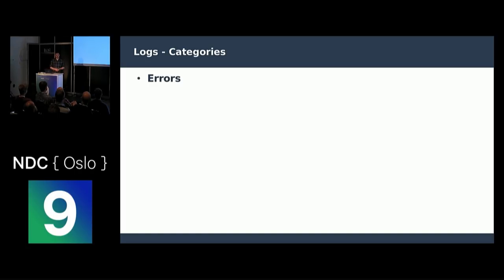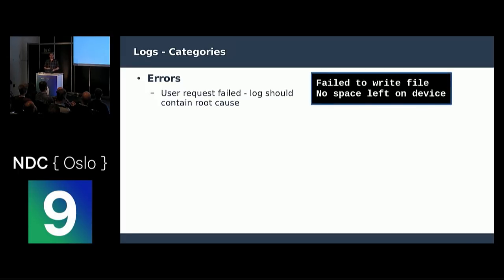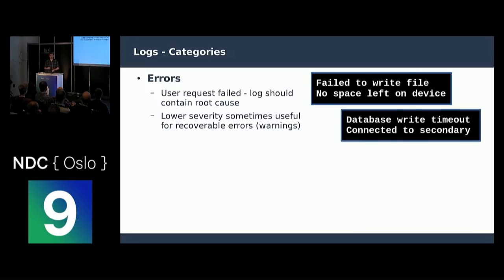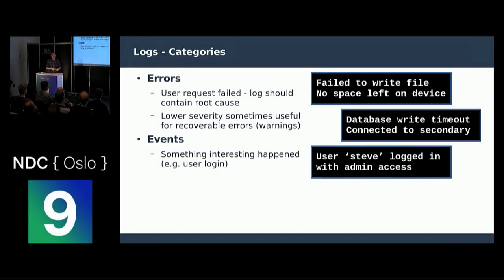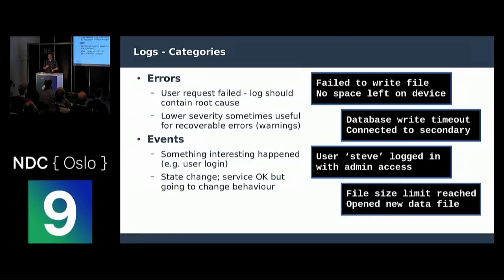We have a few categories of logs. Errors are probably the most useful — if some request failed, the log should ideally contain the root cause of the problem. We sometimes get lower severity errors such as warnings, which might mean something did break but we were able to recover from it. The other thing we often get is events — something interesting happened, it's not a problem, but it might be useful for debugging in the future. And state changes — the software or hardware is going to act differently going forward, maybe writing to a different database or using a different disk drive, something that could be important when working out what went wrong. There's also tracing, which we'll talk about in more detail later.